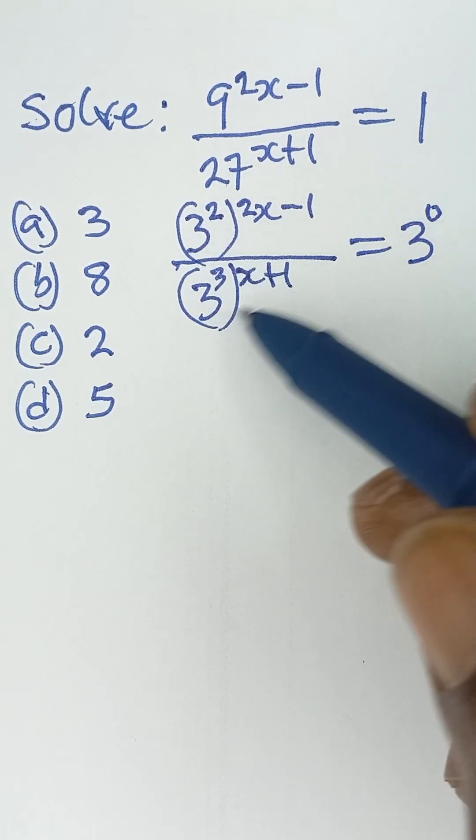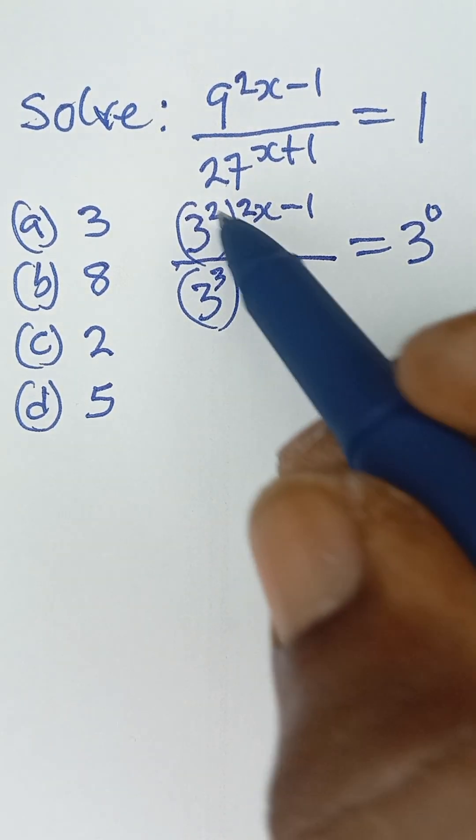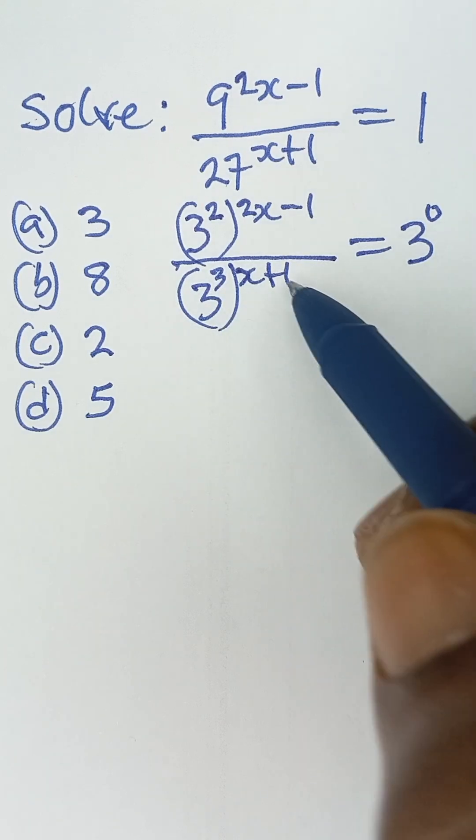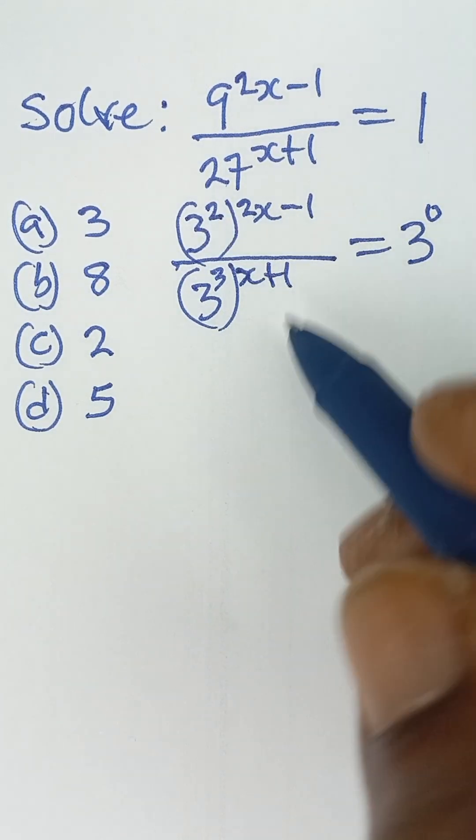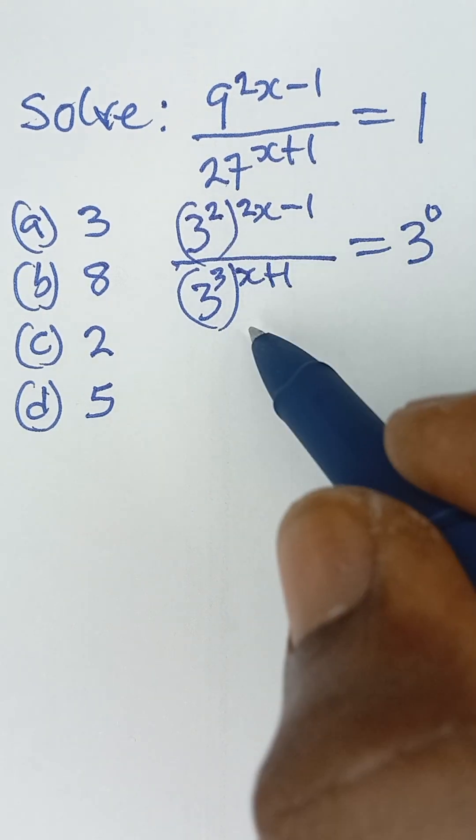So now the next thing is to multiply each power, since all the bases are the same. Now let's multiply the powers, so we have to multiply by this.